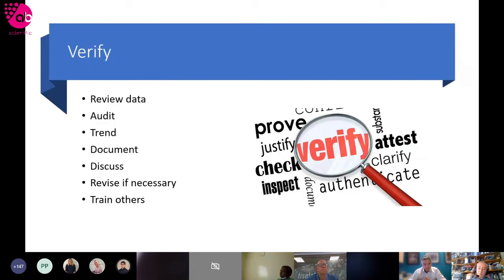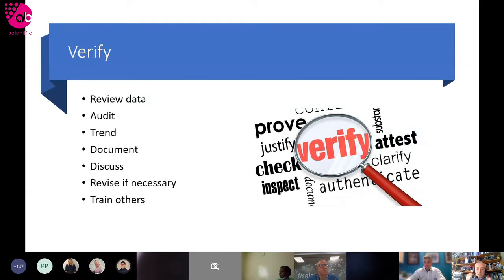Once a risk-based EM program is set up, it's important to regularly review it against key targets — such as product rejection rates, direct environmental monitoring data, and verifications of control methods. It's also important to have a system for data review, to periodically audit the system, investigate problematic results, reassess hazards to see if anything has changed, and ensure that any change controls raised to change processes, equipment, or products are rechecked against the environmental monitoring system.